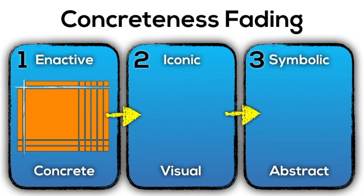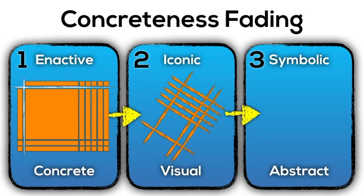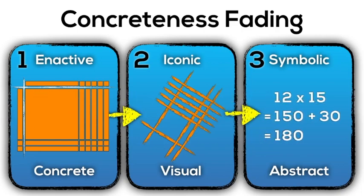And then finally, another possibility might be moving from physical base 10 blocks to drawing a visual representation like the stick or line method we explored today. And then finally, moving to some sort of symbolic representation. In this case, decomposing numbers using mental math and using the distributive property to multiply 10 by 15 and then the remaining 2 by 15.